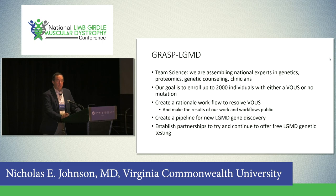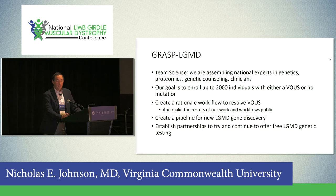The goal is to enroll up to 2,000 individuals with either a variant or no mutation and create a rational workflow to resolve those variants. This is really a service — the workflow will be made public and allow for a pipeline for new gene discovery. We've been working with those offering free genetic testing to establish partners and allow this work to happen efficiently.